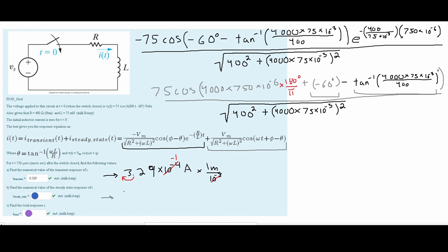Now we can plug all of this into a calculator, and we get approximately 0.03877, or about 0.039 amps. Since we want milliamps, we multiply by 1 milli over 10 to the negative third, moving the decimal 3 places to the right, and we get approximately 39 milliamps. That is the answer for part B.